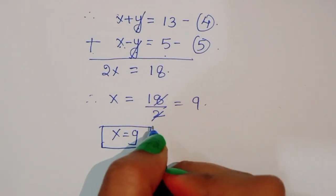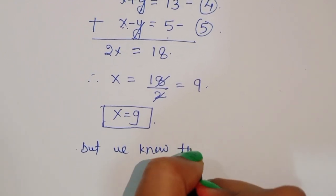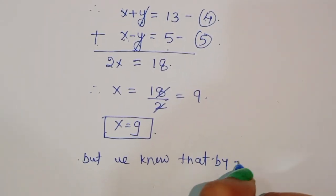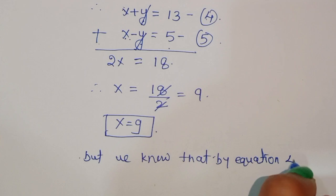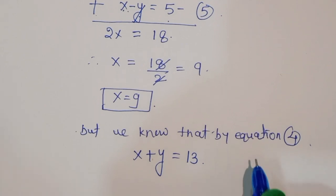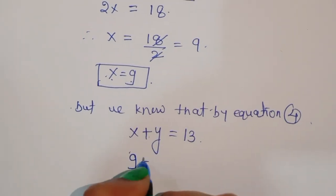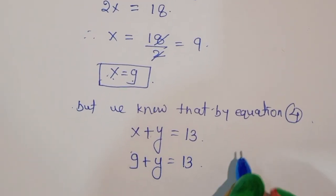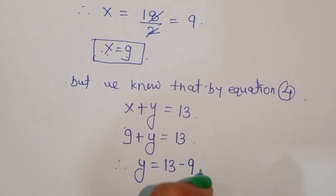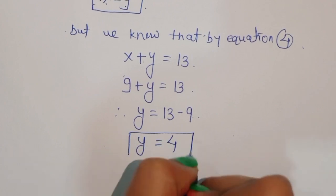We have the value of x. Now using equation 4, x plus y equals 13. Substituting x equals 9: 9 plus y equals 13. Therefore y equals 13 minus 9, which equals 4. So y equals 4.